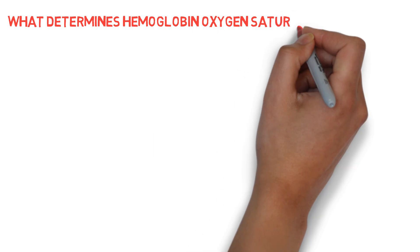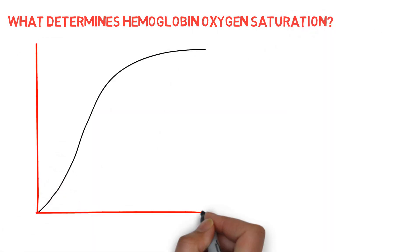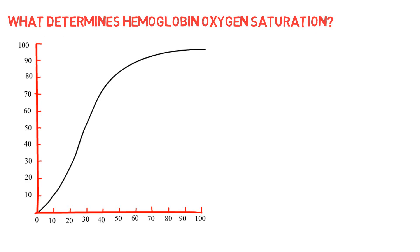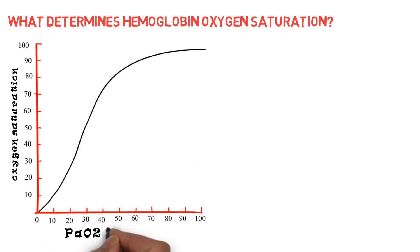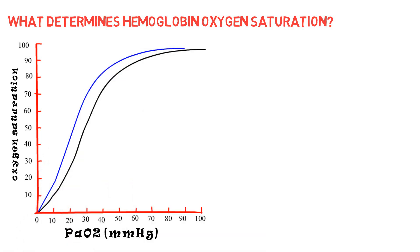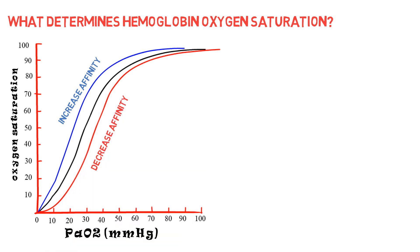What determines hemoglobin oxygen saturation? The saturation of hemoglobin is determined by the oxyhemoglobin dissociation curve, for which oxygen saturation is a function of PO2. The affinity of hemoglobin for oxygen is high at high saturations and less at lower saturations. This effect facilitates oxygen loading in the lungs, where the PO2 is high, and oxygen unloading to the tissues, where the PO2 is low. The position of the oxyhemoglobin dissociation curve is not fixed. Factors that shift the curve to the left increase the affinity of hemoglobin for oxygen, and factors that shift the curve to the right decrease the affinity of hemoglobin for oxygen.